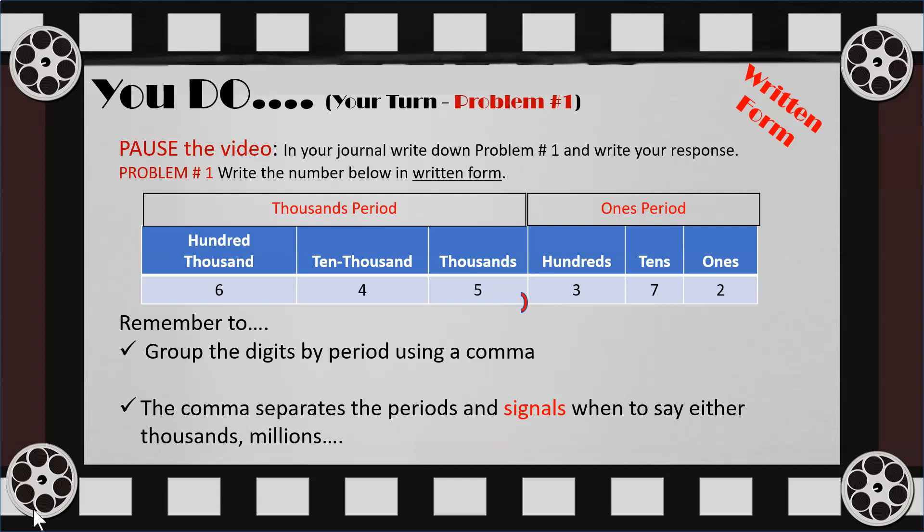Some things to keep in mind: when we read numbers, we read them from left to right. Even though this is a big number, we can group it by period. Also, the comma signals when to name that period. Hopefully you have your response recorded — we will check it at the end.